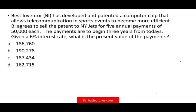Let's take a look at the first question. Best Inventor has developed and patented a computer chip that allows telecommunication and sports events to become more efficient. PI agrees to sell the patent to the New York Jets for five annual payments of $50,000. The payments are to begin three years from today, given a 6% interest rate. What's the present value of the payment? I like to show this on a timeline.